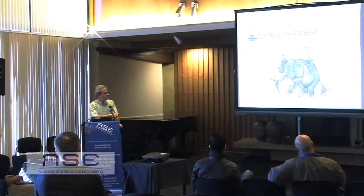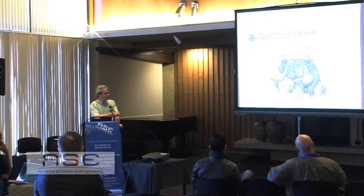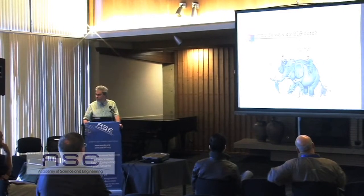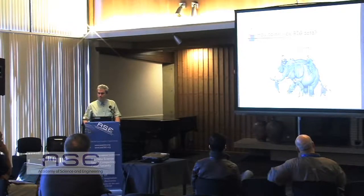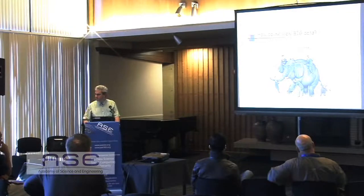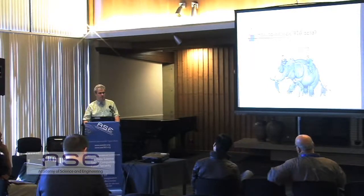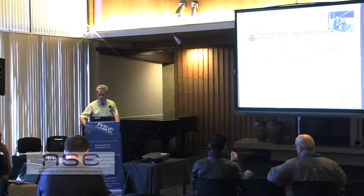The elephant in the room is that oftentimes when people talk about large data, what they say reveals more about their backgrounds and experiences than about the data they're making claims about. A statistician might say you need to impose a model; a machine learner might say it just needs regularization; an algorithms person might say it's big so you need fast algorithms. The idea is to get one step beyond that.